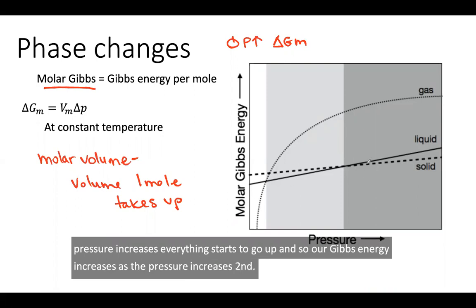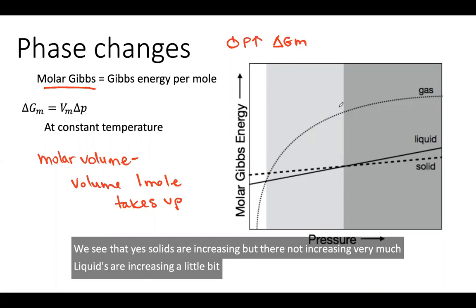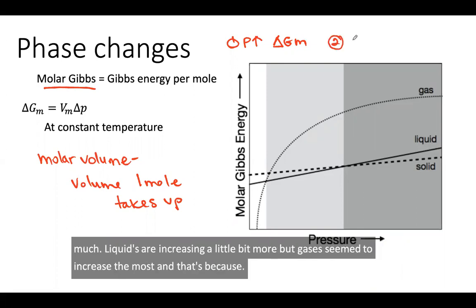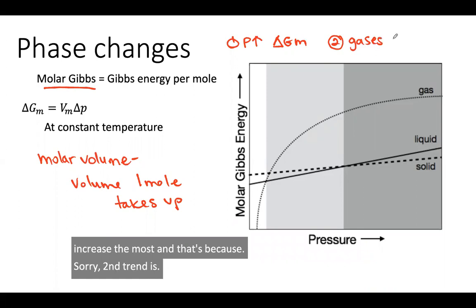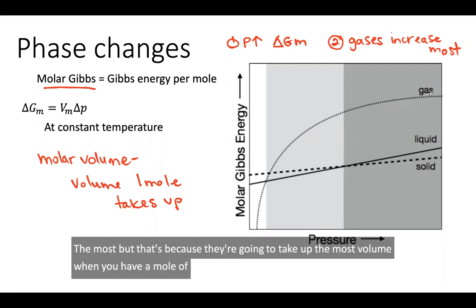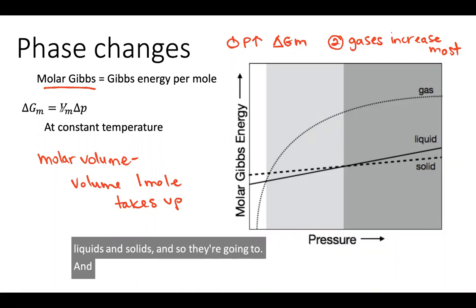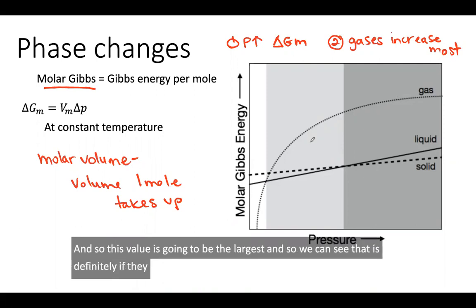Second, we see that solids are increasing, but they're not increasing very much. Liquids are increasing a little bit more, but gases increase the most. Our second trend is gases increase the most because they're going to take up the most volume when you have a mole of the substance. They're not compressed like liquids and solids, so this value is going to be the largest and it affects the molar Gibbs energy the most.